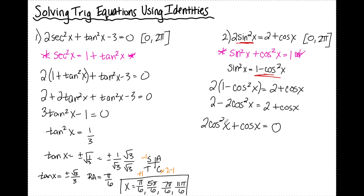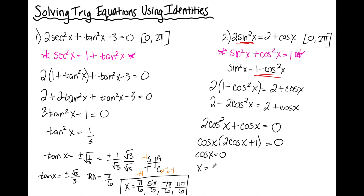From here I see a GCF of cosine x. If I factor out cosine x, I'm left with cosine x times (2 cosine x plus 1) equals 0. Setting the left factor equal to zero, cosine x equals 0, and I know that cosine x equals 0 at π/2 and 3π/2.